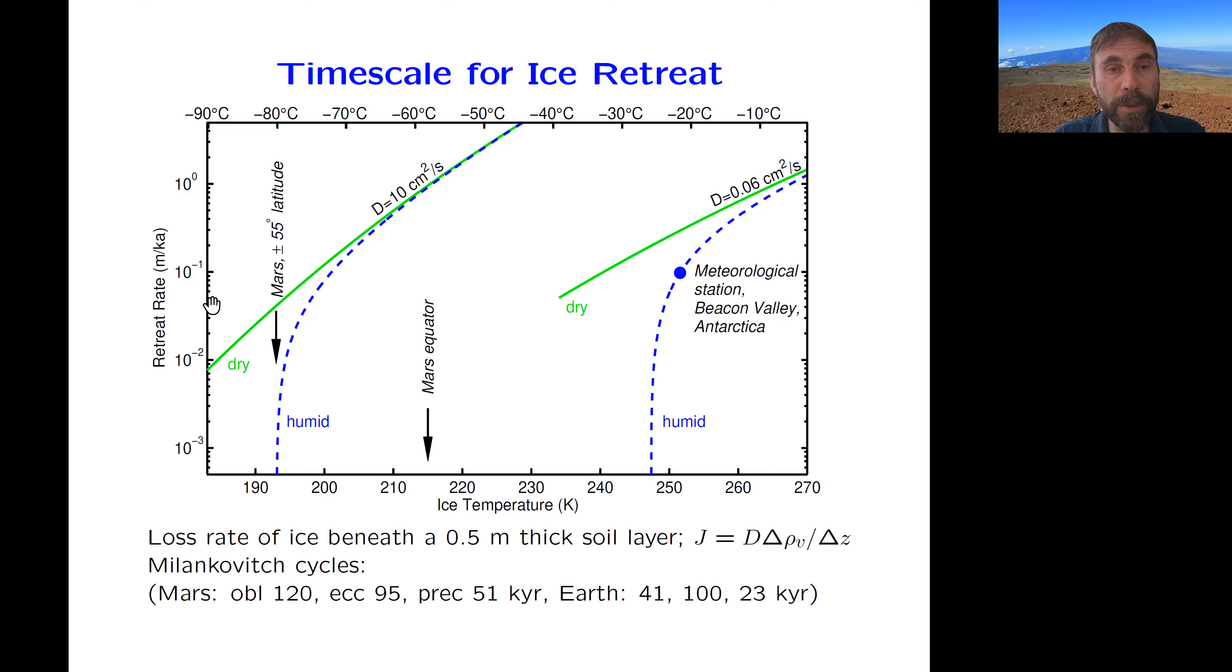So in the dry valleys, the humidity slows the sublimation loss, but it doesn't stop it, at least in the current climate conditions. And on Mars at some latitudes, of course it will, there'll be an equilibrium ice table and no loss.